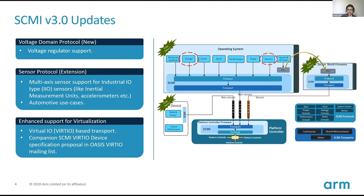The voltage domain protocol is something that would interface with the Linux voltage regulator framework. There was a lot of requirement and many asks from different partners to enable this, because there are genuine use cases where you need to control the voltages of peripherals like SD cards, touch panels, and so on. The other part we have added is enhanced sensor support. Sensors as a protocol have existed since version one, but here we have extended the protocol mostly for automotive use cases where you need complicated multi-axis sensor support.